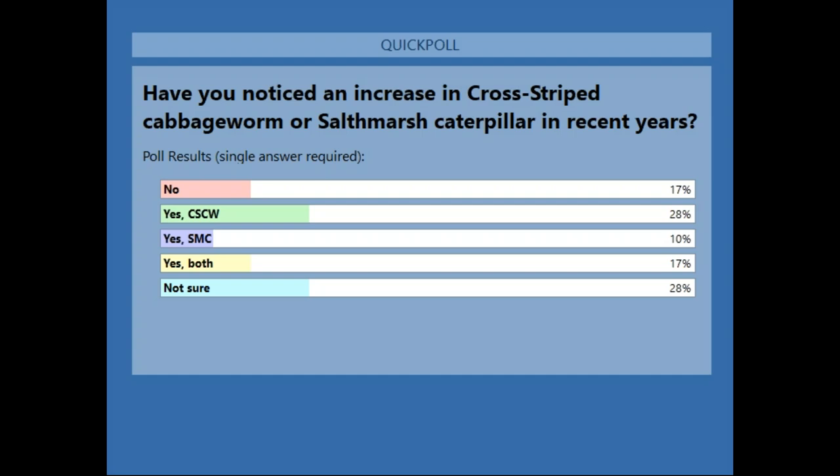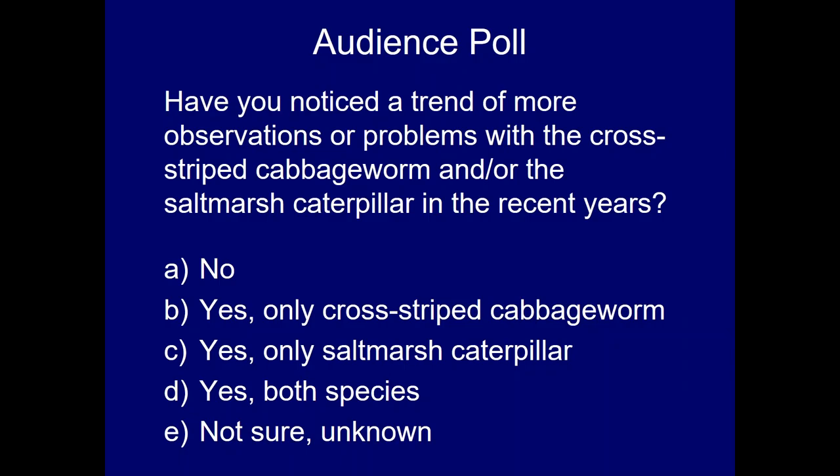Thank you for those replies. An important question is how different pests may be changing their ranges or habits, such that cross-striped cabbage worm and salt marsh caterpillar are becoming more of a problem. We want to keep track of this, and if anyone wants to share more information we'd be happy to hear from you.